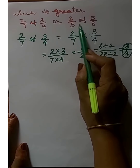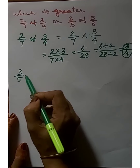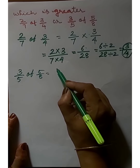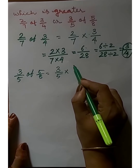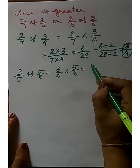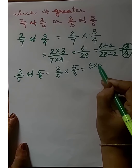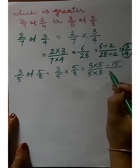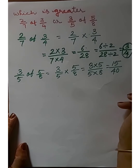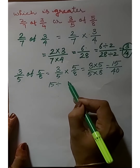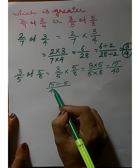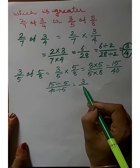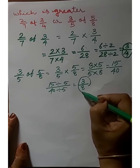Next we find 3/5 of 5/8. We know that 'of' means multiplication. We find 3/5 into 5/8. We find the product of numerators and product of denominators: 3 into 5 is 15, and 5 into 8 is 40. Simplify: 15 divided by 5 is 3, and 40 divided by 5 is 8. The fraction is 3/8.